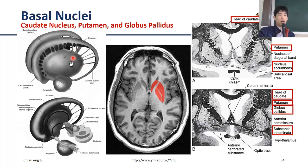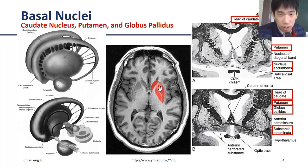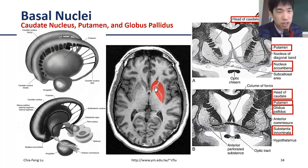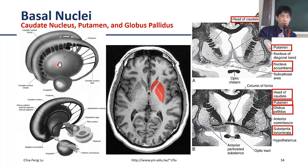In 3D, the caudate nucleus is a curved structure surrounding the putamen. On an actual MRI slice, you can see the putamen clearly, and only the front end of the caudate is visible. There is also a small portion on the medial side of the putamen called the globus pallidus. If you remove the putamen, you can see the globus pallidus on the medial side.